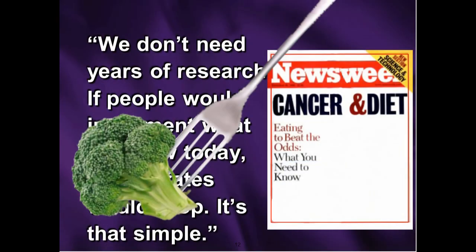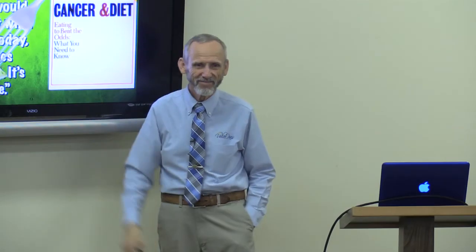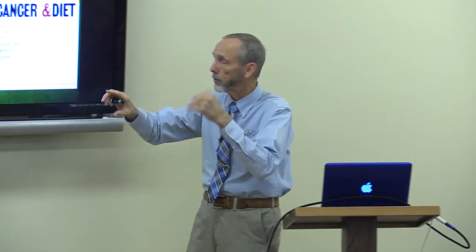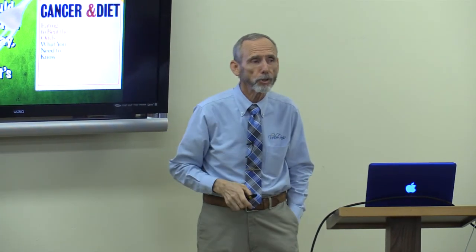Is broccoli a good anti-cancer food? In which form is it most anti-cancer? Number three is raw. Number two is lightly steamed — it breaks the sulfur bond and lets the sulforaphane work on the cancer. Number one is broccoli sprouts. It's still a great anti-cancer food in any form.